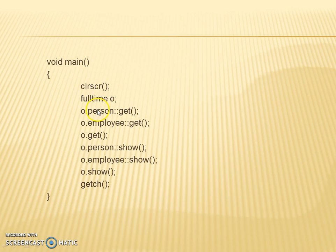Where we write fulltime as a derived class using object o. That is o.person.get(), o.employee.get(), o.get(), o.person.show(), o.employee.show(), and o.show().